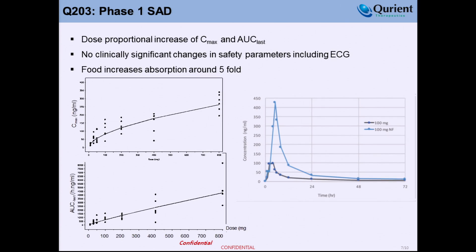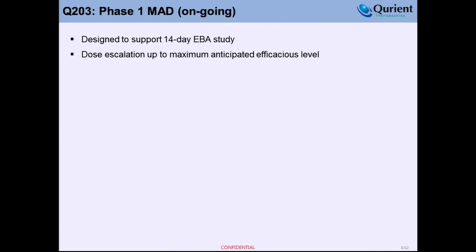The Phase 1 SAD study has been successfully completed in the US. We are seeing dose-proportional increases in C-max and AUC. Interestingly, we observed a food effect that increases absorption approximately five-fold higher with a high-fat diet. The Phase 1 MAD study is ongoing — there is not much to update yet, but it is designed to support a 14-day EBA study, and we are halfway through the dose escalation phase.